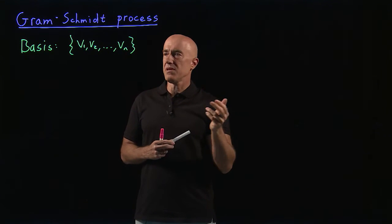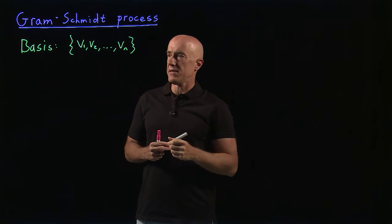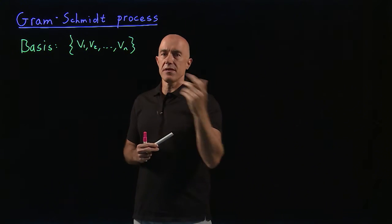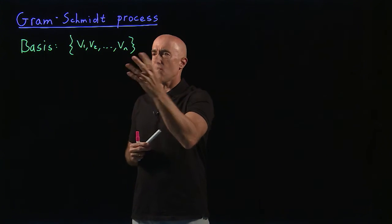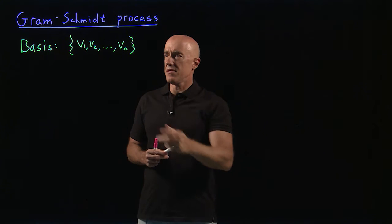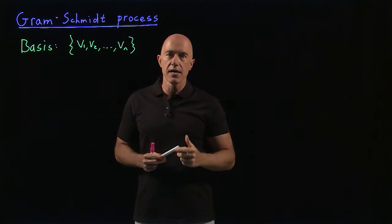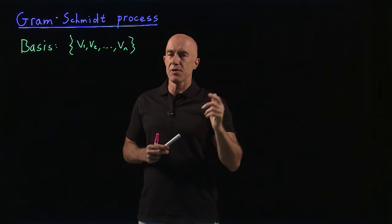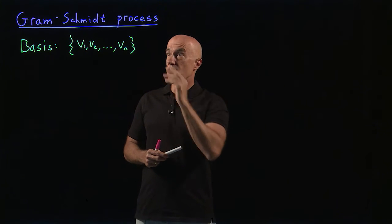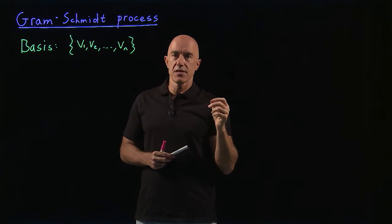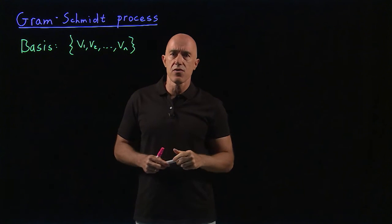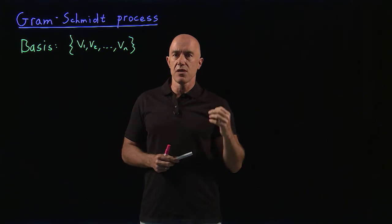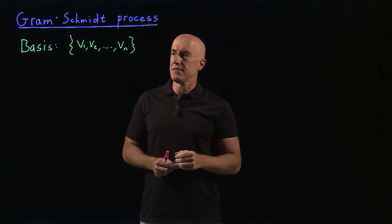So these are n linearly independent vectors that form a basis for an n-dimensional vector space. We'll just be thinking about vectors as column matrices, but this is actually more general than that. So this is an ordinary basis. These vectors may not be orthogonal with each other. They may not be normalized.